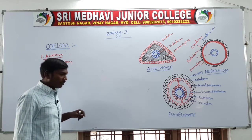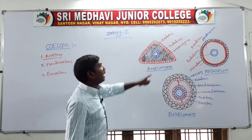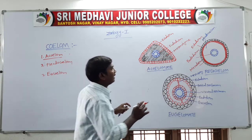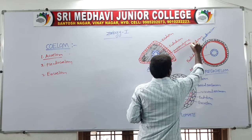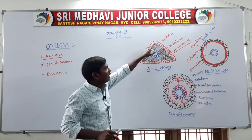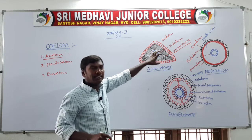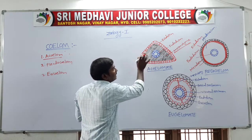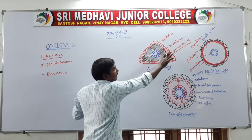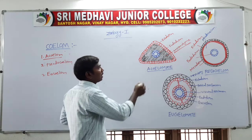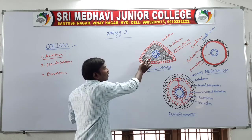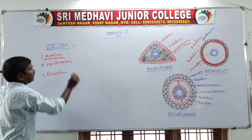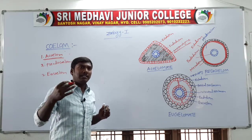Acoelomate: animals have outer ectoderm and inner endoderm, but the middle space is formed by the mesenchyme. The mesoderm is derived from the mesenchyme, so there is no space between the visceral organs and body wall. The space is fully occupied by mesenchyme, meaning there is no fluid-filled cavity.